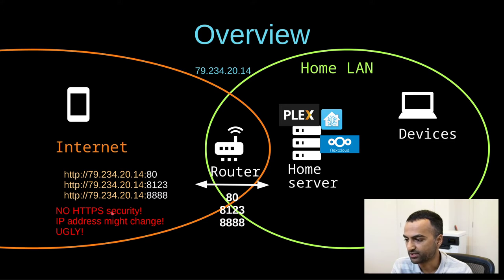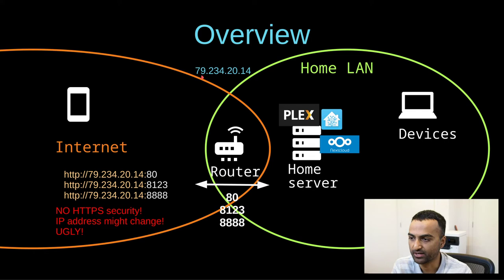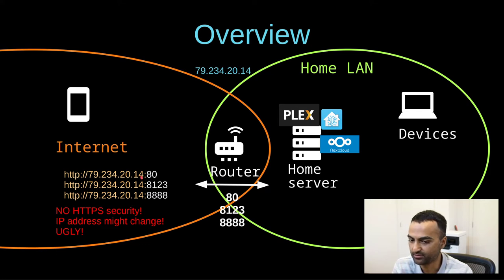Obviously there are a few issues with this. For example, there's no security and no encryption, so all of the data you send and receive over the internet is open to eavesdropping, especially if you're using a random free Wi-Fi hotspot. The second problem is that this IP address might actually change — depending on the kind of connection you have, it could change at random unless you're paying extra to your ISP for a static one. And thirdly, it's just plain ugly — you've got a string of numbers to type in.